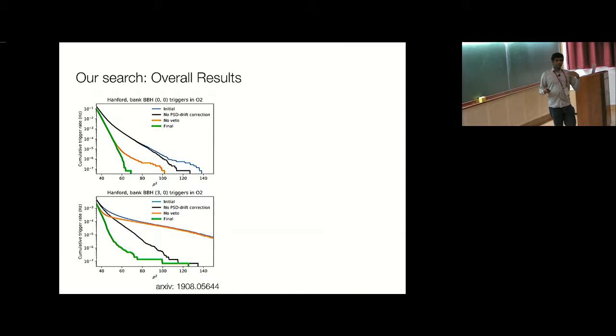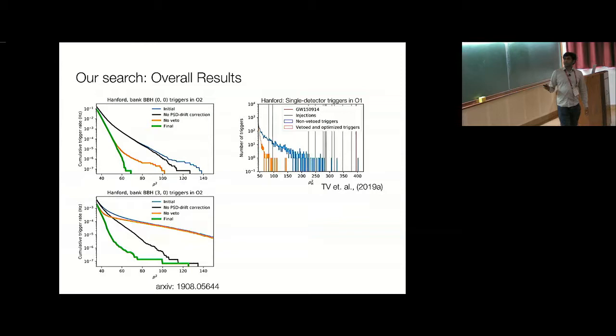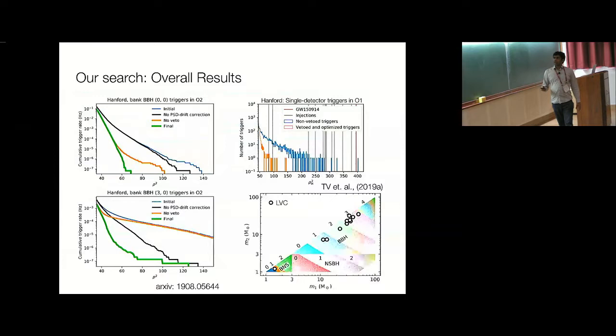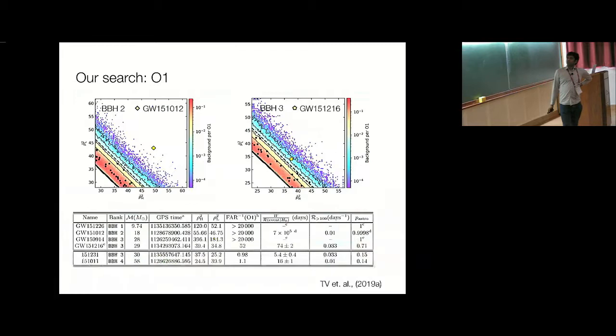These different systematics are more or less important depending on the length of the waveform, which is effectively the mass. These are coincident triggers between the two detectors, and this is just a single detector histogram for the O1 data. This is 150914, and you can see the level of background rejection. These are all the LVC injections that are present in the data, and we keep all of them in, so we are safe from losing real events. If we go back to the old plot, these are the LVC events that were shown in the first plot, and we have six new events in O2 and one new event in O1.